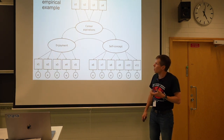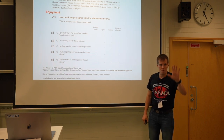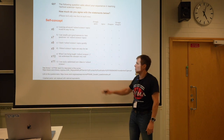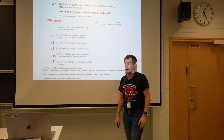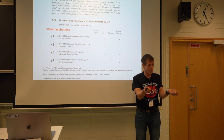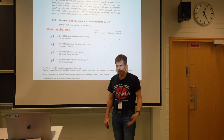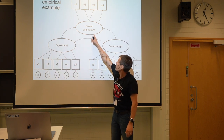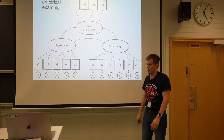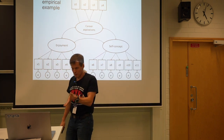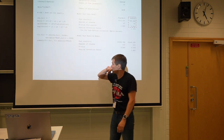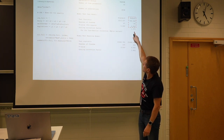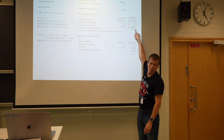Our measures are: five questions about whether a student enjoys science, six questions about how much the person thinks they are good at science (self-concept), and four questions about career aspirations — would the student want to work with science when they grow up? We fit a confirmatory factor analysis model and test the hypothesis that the enjoyment items load on one factor, career aspiration items on another, and self-concept items on a third. Here's the R syntax for that model.